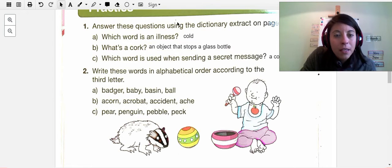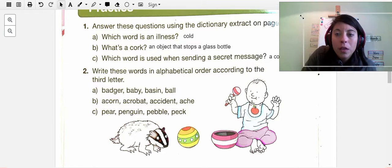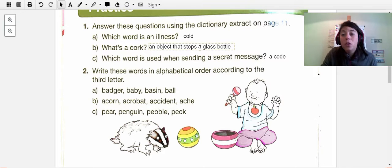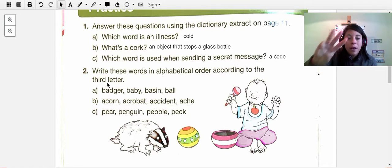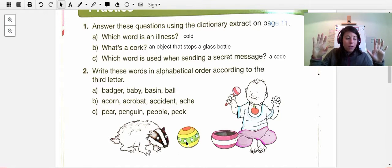So you guys, we did this activity where I already showed you what the answers were. The next activities you're going to have to do them on your own. So you're going to write these words in alphabetical order according to the third letter. So you have badger, baby, basin, ball. This is a badger, this is a baby, this is a basin, and this is a ball, just so that you know what the words mean.